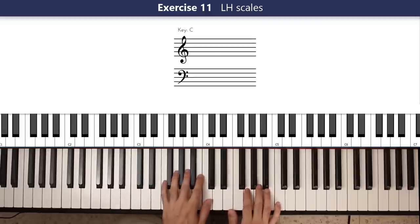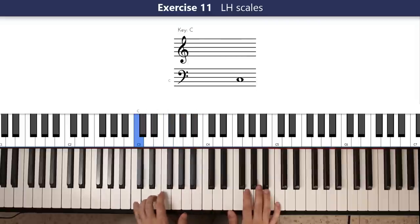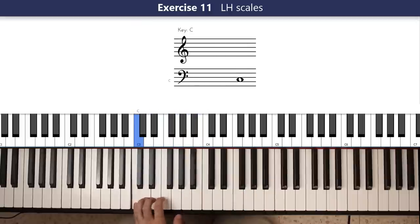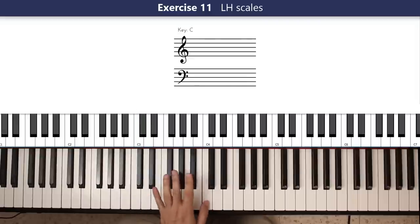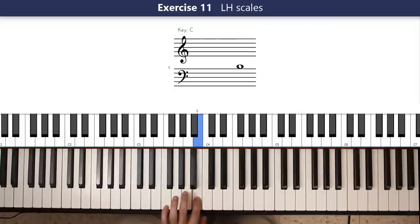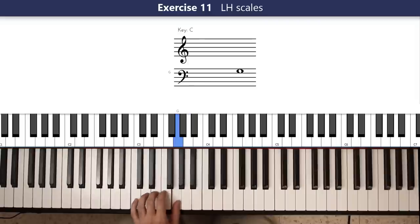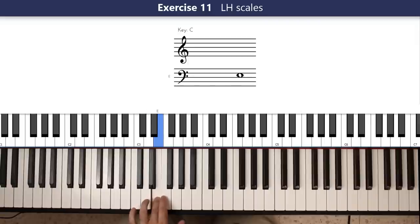So you can play the mirror image of this. Basically, it's the descending scale. What I'm playing is, I'm starting with the thumb on the C, B, A. Now I'm pivoting, I'm moving my thumb beneath my third finger, and I'm hitting the G. F, E, D, C, D, C, E, C, F, C, G.